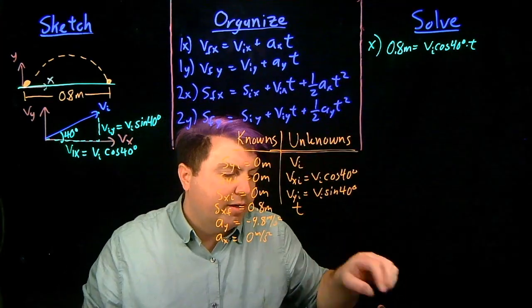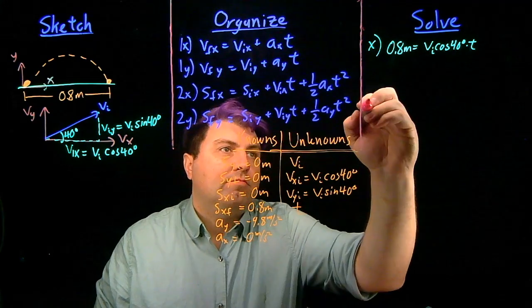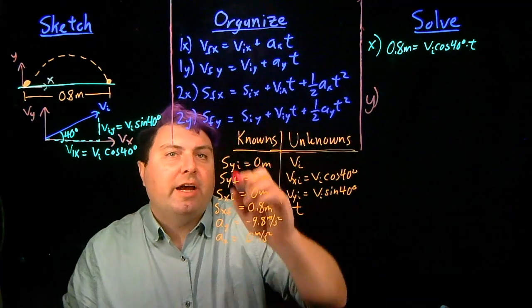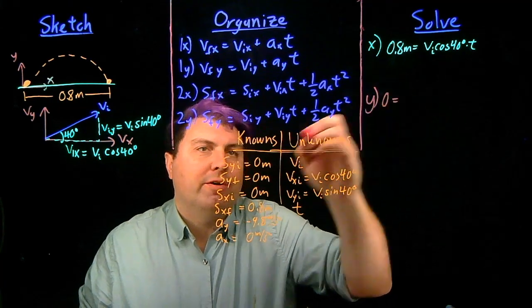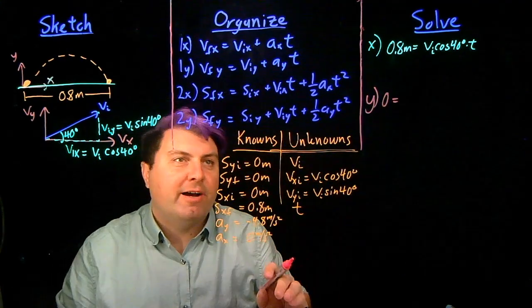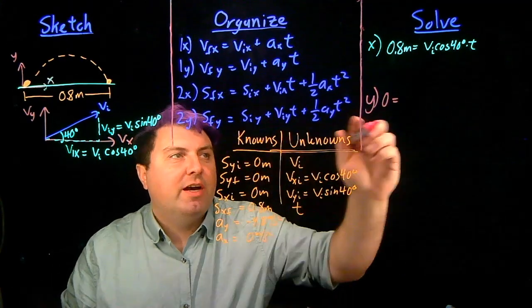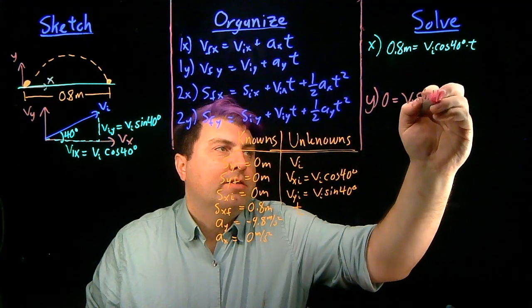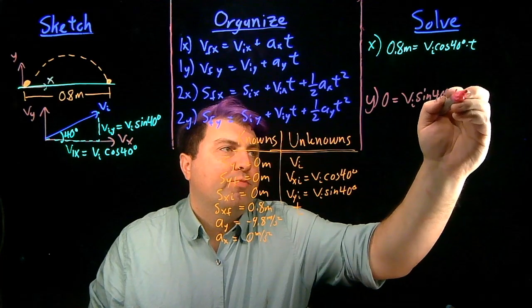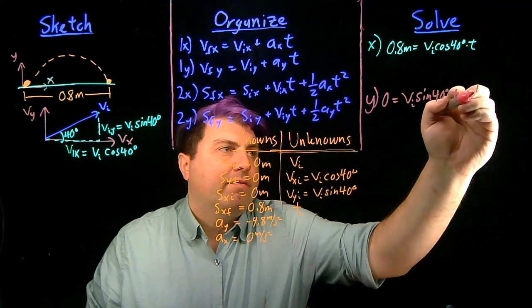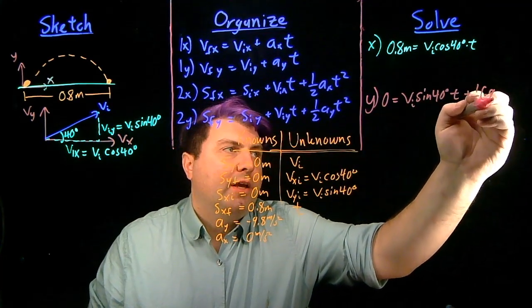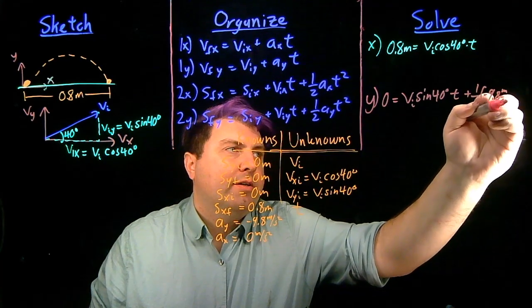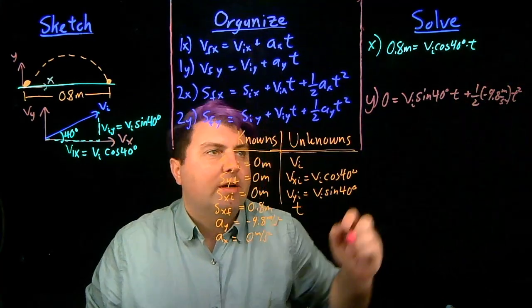In my y direction, I have sfy, which is 0. Got to write it once on one side. Siy is 0, but I'm not going to write that. Viy, which is vi sine of 40 degrees times time, plus 1 half times negative 9.8 meters per second squared, times t squared.